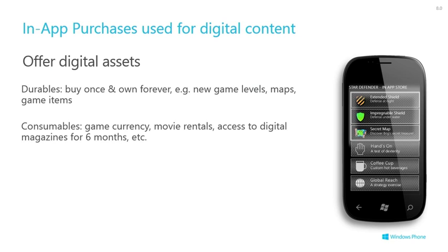Consumables are things that get used up — these are game tokens. The user spends them effectively by interacting with your application, or movie rentals. Once they've been spent, they're gone forever. When they're expired, the user has to go and buy some more.